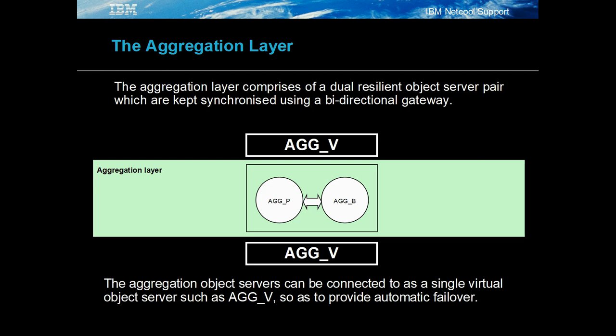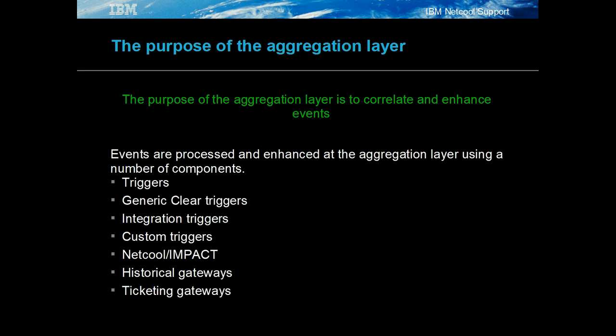The aggregation layer comprises a dual-resilient object server pair synchronised using a bi-directional gateway. The aggregation object servers can be connected to using a virtual object server name, which is useful for clients where failover and failback is not available, such as the JDBC gateway. The purpose of the aggregation layer is to correlate and enhance events.